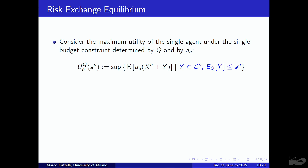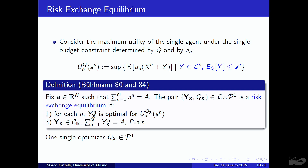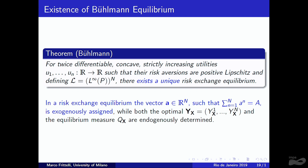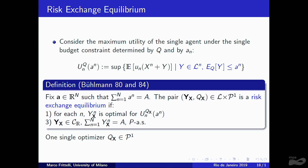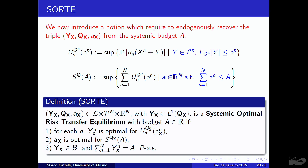Recalling the Bühlmann risk exchange equilibrium: Yₙ maximizes single-agent expected utility given a single probability Q; Y must satisfy the clearing condition; and the vector A is exogenously assigned. In our SORTE definition, each agent has their own probability Qₙ, and we additionally optimize the maximal systemic expected utility with respect to A satisfying the budget constraint.